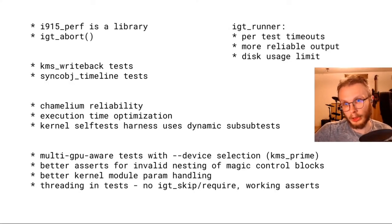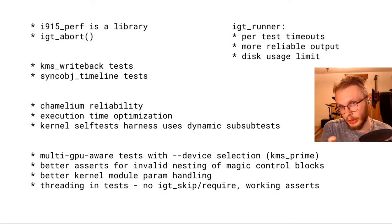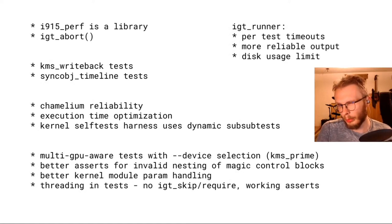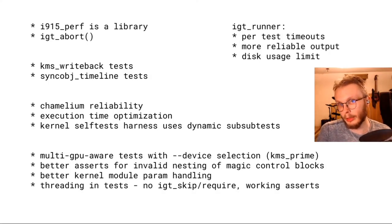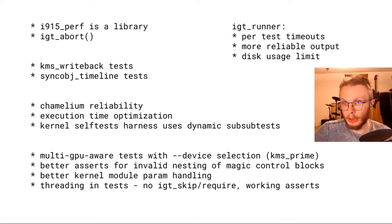igtcore also has a new thing called igt_abort. As a bit of background, IGT is a set of tests and tools to aid DRM driver development. igt_abort is a way to abort the execution of the whole test run from inside a test when you detect an abnormal condition. Normally we abort execution on wedges or other serious conditions, and this allows you to detect those from the test and bail out if the machine is in a weird state.